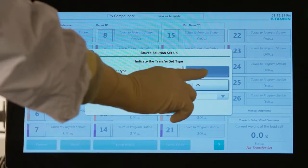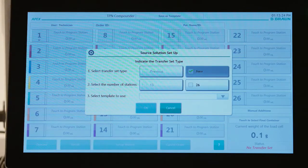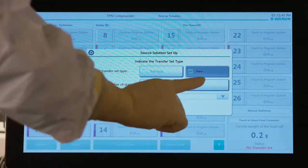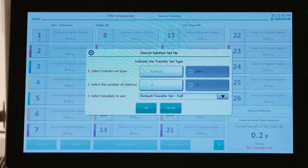Tap New when you're starting APEX for the first time of the day. Tap 26 to select the number of lines in the transfer set you will be using to compound orders.